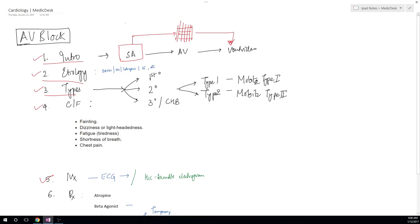Whenever there is slowing down of the impulses from SA node to the ventricles, it is known as AV block. Now we talk about the etiology. It can be because of drugs, it can be because of ischemia, it can be because of surgery, cardiogenic or infective endocarditis, and there are many causes.